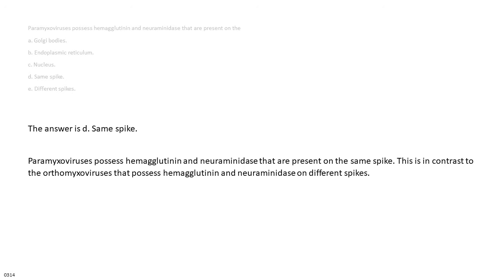The answer is D. Same spike. Paramyxoviruses possess hemagglutinin and neuraminidase that are present on the same spike. This is in contrast to the orthomyxoviruses that possess hemagglutinin and neuraminidase on different spikes.